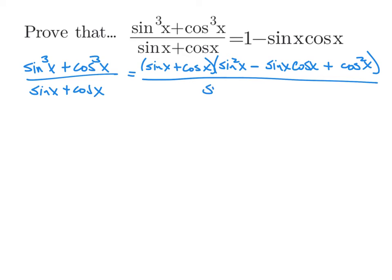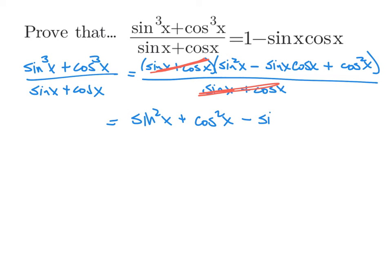In the denominator we leave it as it sits, then look for things to cancel. The smaller factor, sine plus cosine, cancels with the denominator. We're left with sine squared plus cosine squared minus sine x cosine x. I rearranged it so the sine squared and cosine squared are together, because sine squared plus cosine squared equals one. Once we replace that, we're left with 1 minus sine x cosine x, which is the right side of our identity. So we're done.